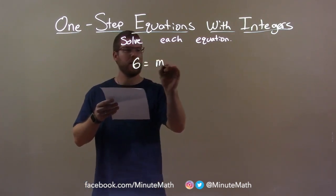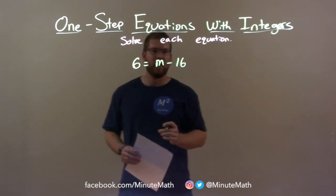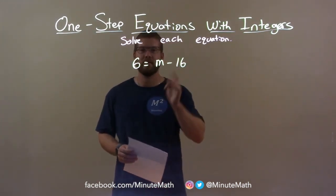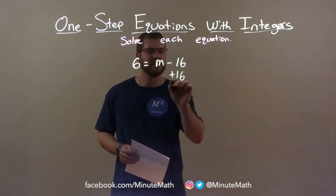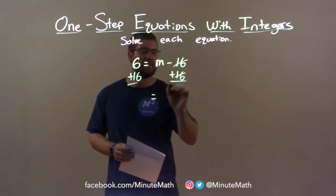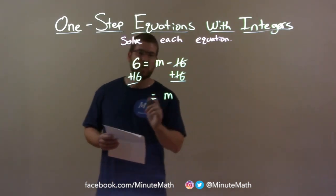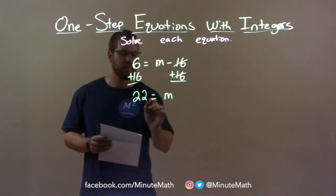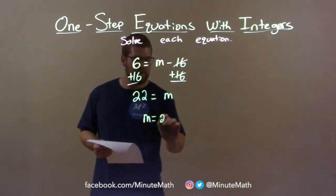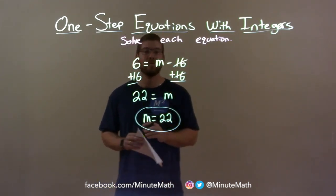6 equals m minus 16. I want to get m by itself — it's being subtracted by 16. Opposite of subtraction is addition. I'm going to add 16 to both sides. The 16s cancel, leaving m by itself. 6 plus 16 is 22. So 22 equals m — I can write m first: m equals 22. There we have our final answer.